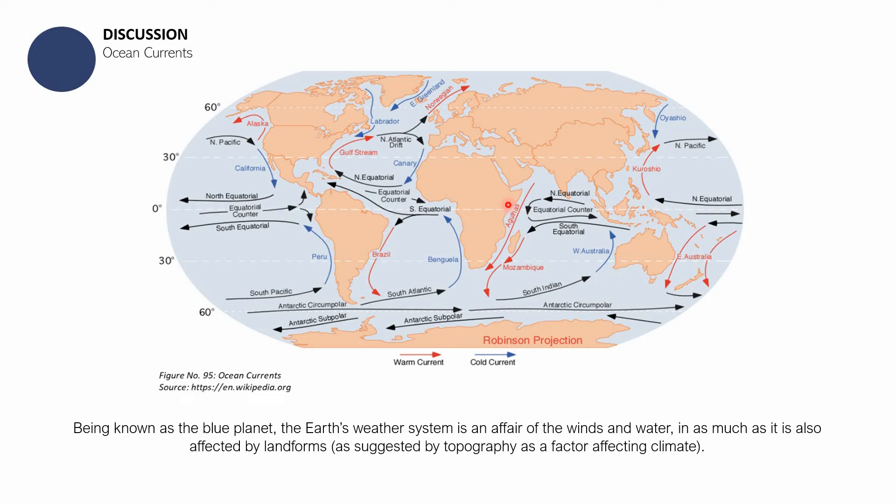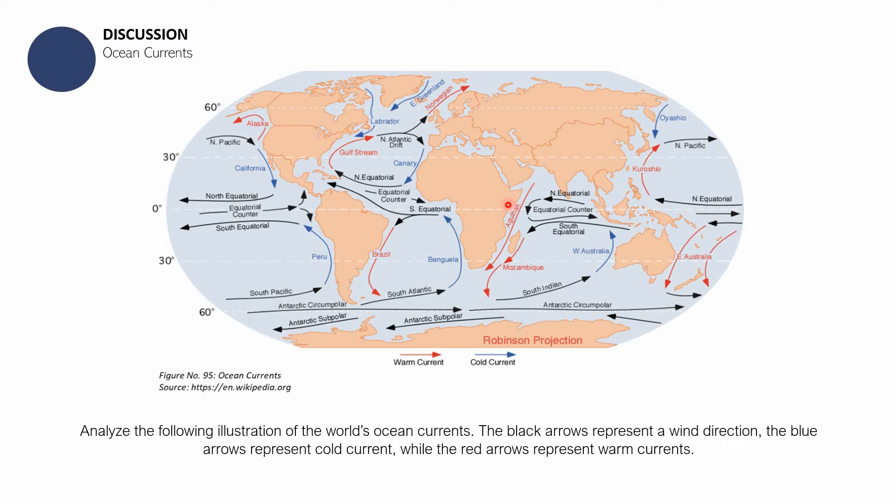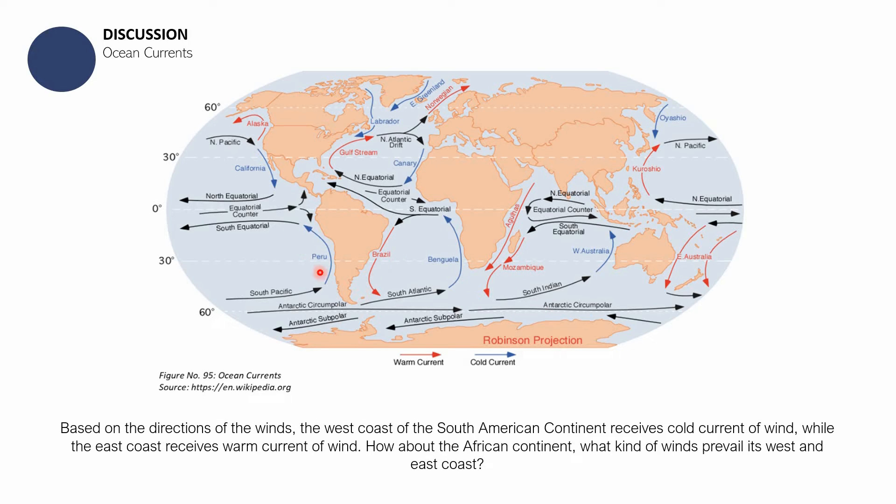That rising and sinking of air can happen in a particular area in smaller events, but it can also be magnified to something as great as the ocean currents. Notice that in this illustration, the west coast of the South American continent receives cold current of wind, whereas its east coast receives hotter currents of wind. The west coast of the African continent receives cold air, and the east coast receives warmer current.